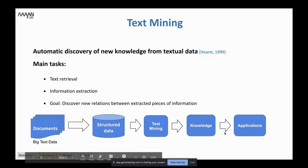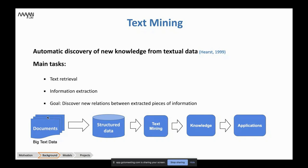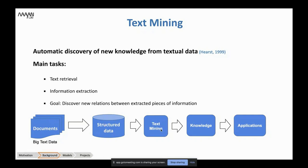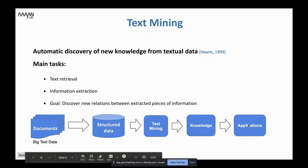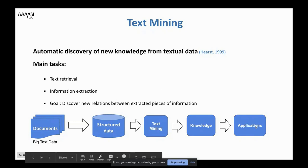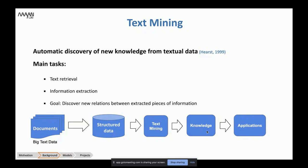Looking at this illustration, you can see how the stages of text mining are processed. We begin with a huge corpus of textual data. We need a way to make it structural. Then we can do text mining on the structural data to extract knowledge. The idea is to develop applications that can use this knowledge — we don't do it just for fun, but to help humanity.